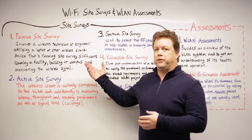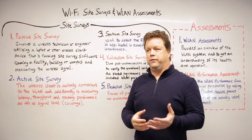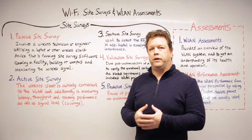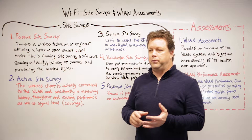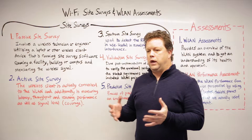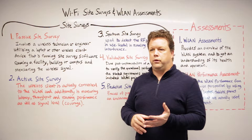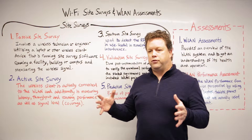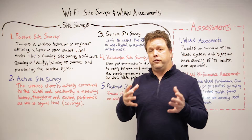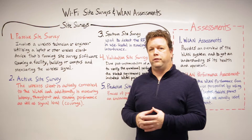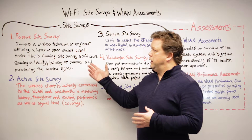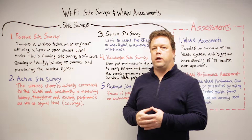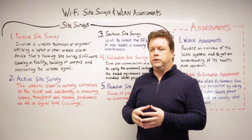The first one I want to talk about is Passive Site Survey. A Passive Site Survey involves an engineer or a wireless technician visiting a site — it could be a building, a facility, or a campus — and they will use a device, whether it's a laptop or a tablet, running specialized software that measures the wireless signal from the access points in the wireless system. The act is passive, so there's no connectivity going on; it's just a measuring of the signal.